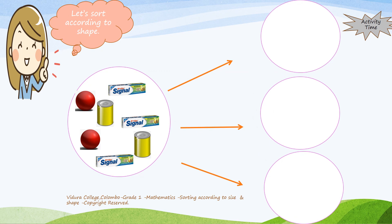In this circle, you can see some different shapes of objects. Let's sort them according to their shapes.